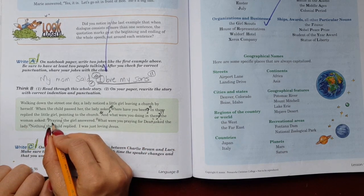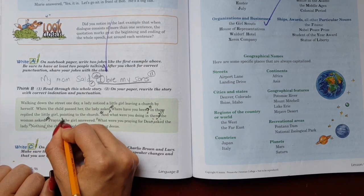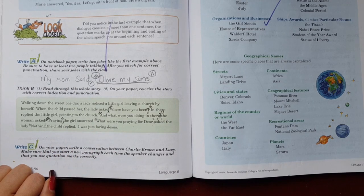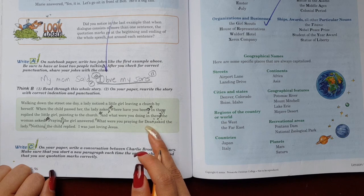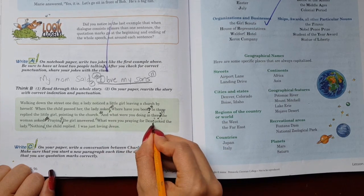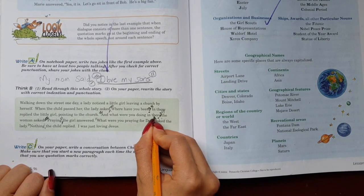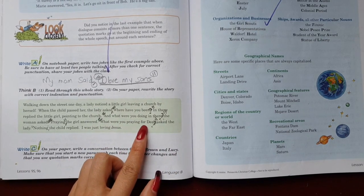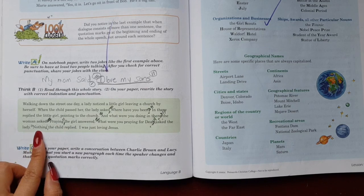The woman asked, praying, the girl answered. Quotation marks, yes, comma, the girl answered. What were you praying for? What were you praying for there? Why were you praying, dear, with a question mark because it's a question. Quotation marks. What were you praying for, dear? Asked the woman.